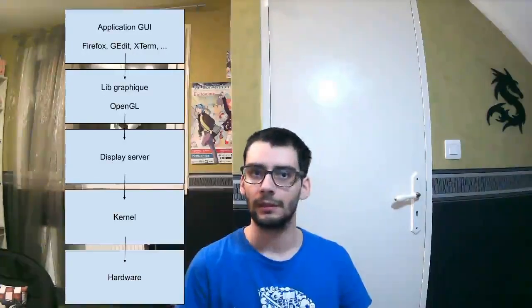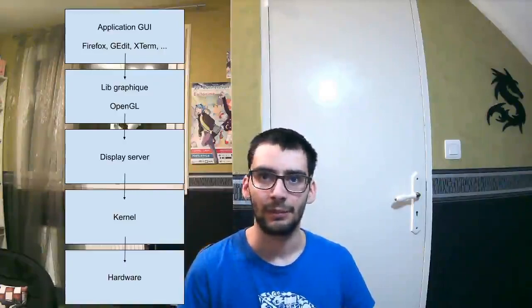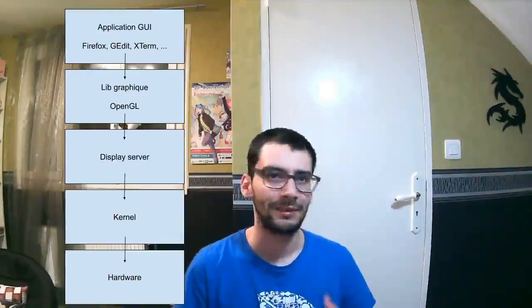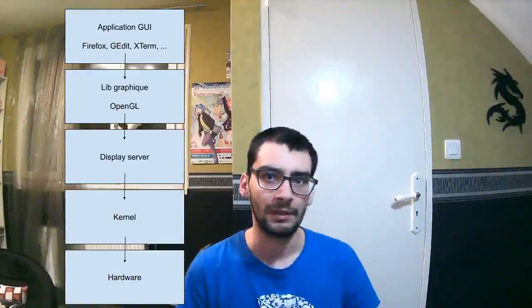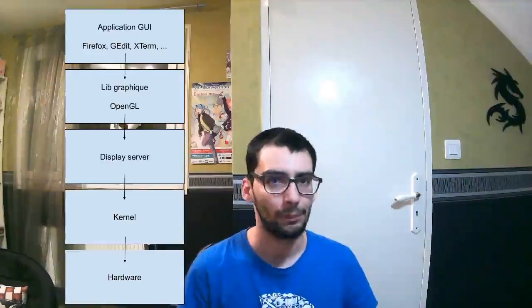The Graphic Server, or Display Server, is an element at the core of the graphical stack of the system. It is the intermediary between an application GUI and a kernel. It is inconceivable to try to display elements on the screen by communicating directly with the kernel, as it exposes very low-level functions that can vary from system to system. That is why, on each OS, we find a display server.